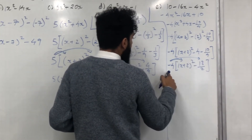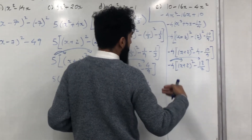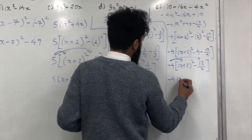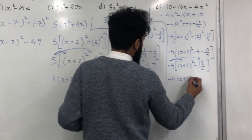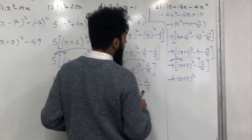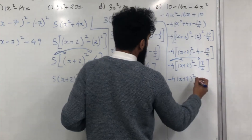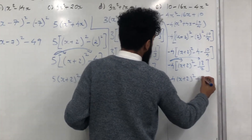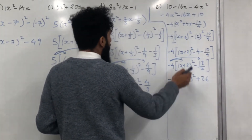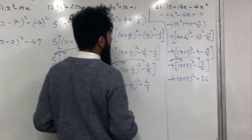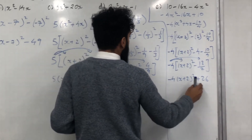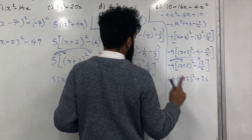Expanding: −4 multiplied by (x + 2)² is −4(x + 2)². −4 multiplied by −13/2 is positive 26. So completing the square on 10 − 16x − 4x² gives −4(x + 2)² + 26.